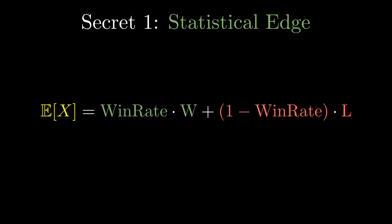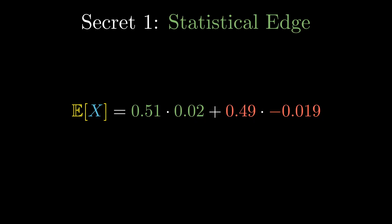Say you win 51% of the time with an average gain of 2%, and you lose 49% of the time with an average loss of 1.9%. Put that together and you get a tiny but positive EV, about 0.08% or eight basis points. Can you make money with this tiny edge? Let's see.